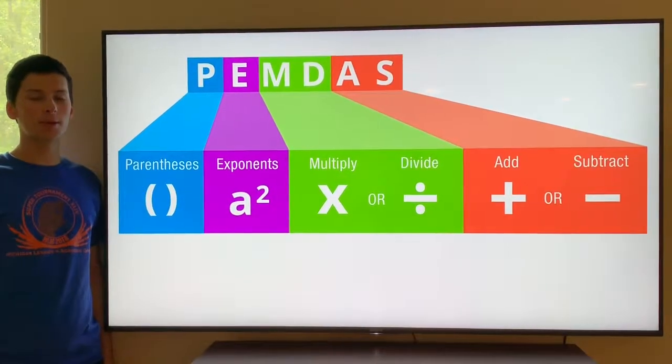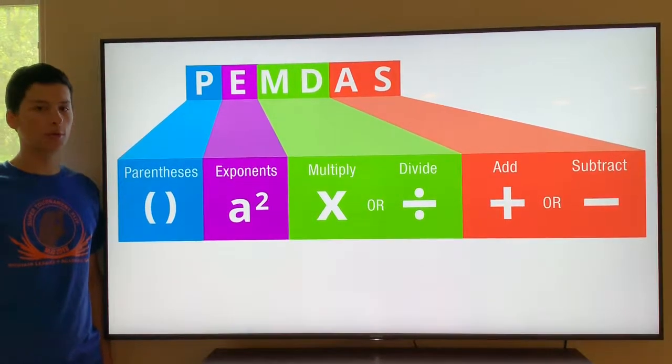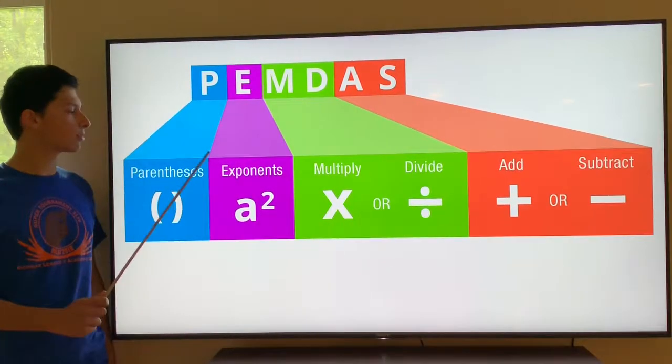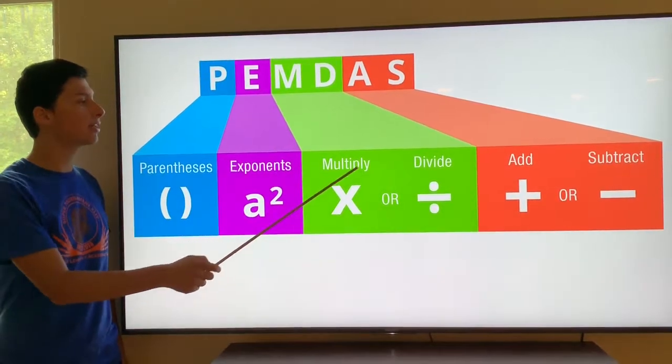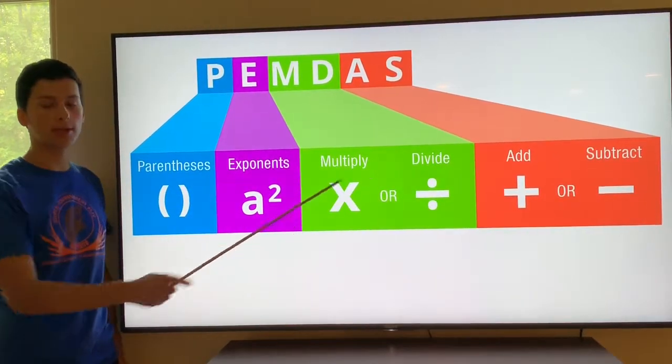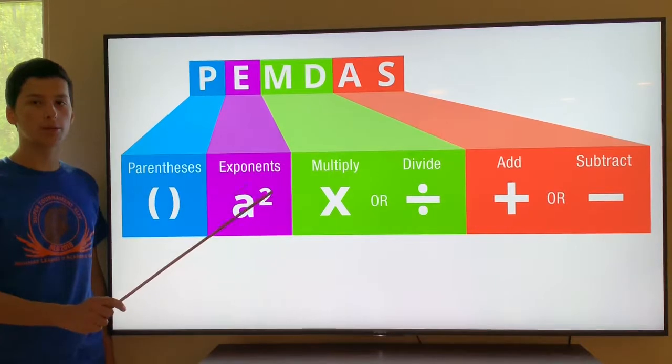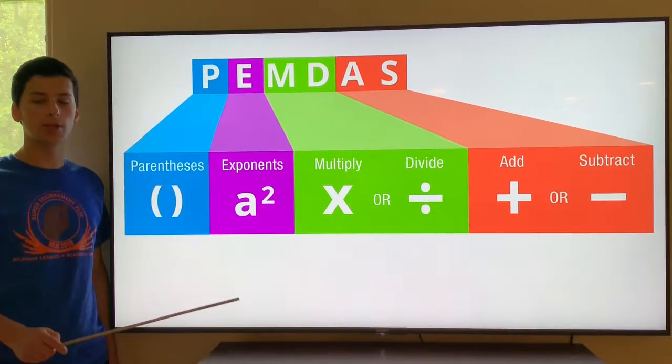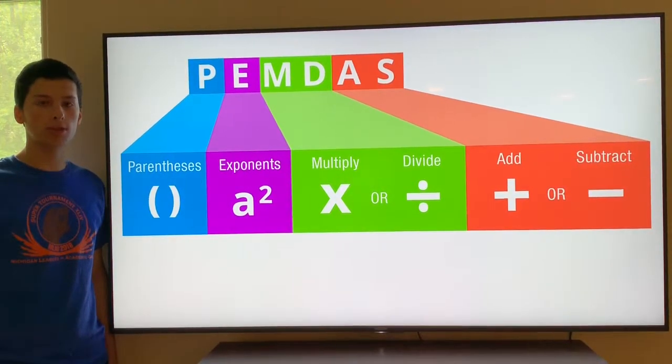Order of operations is represented by a fun little acronym known as PEMDAS. PEMDAS represents parentheses, exponents, multiply, divide, add, and subtract. This is the order in which you resolve conflicts when you have an ambiguous solution with more than one interpretation.